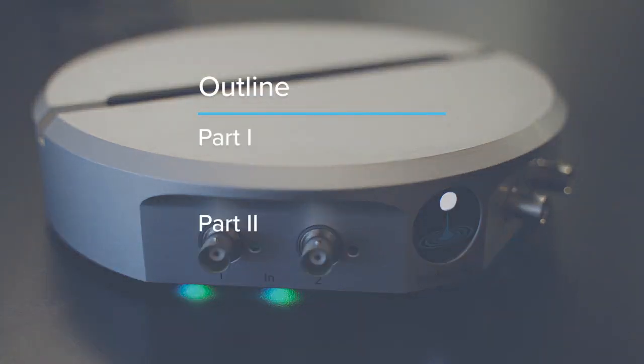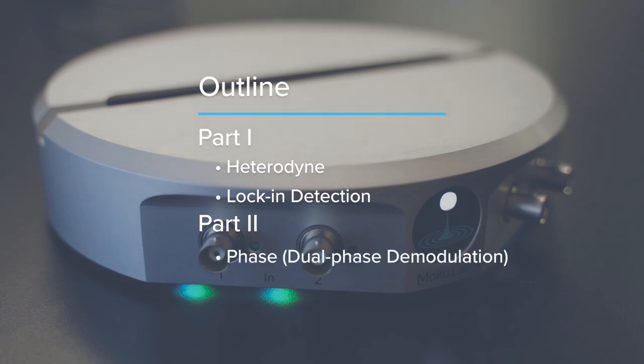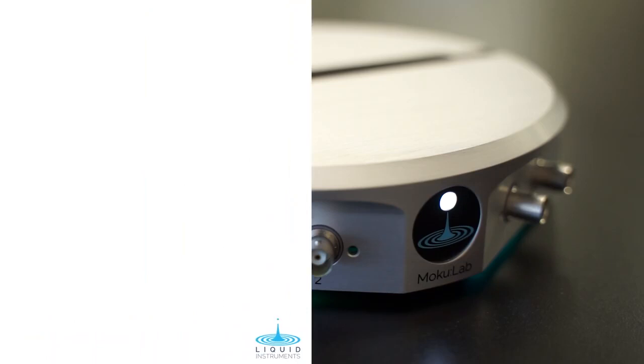This is a two-part video. In part one we will introduce and demonstrate the heterodyne detection and then apply this to the situation of a lock-in amplifier. Then, in part two, we will introduce two important parameters of a lock-in amplifier, phase and filter bandwidth. So, let's start.